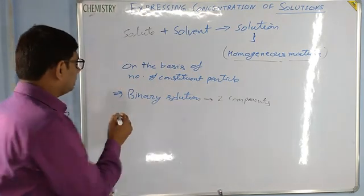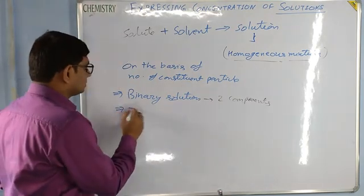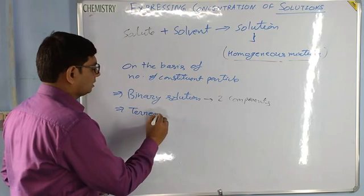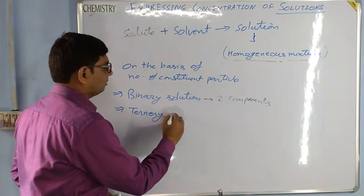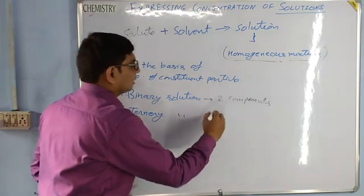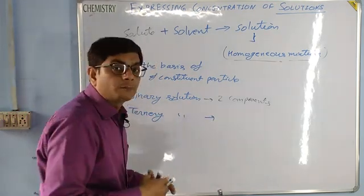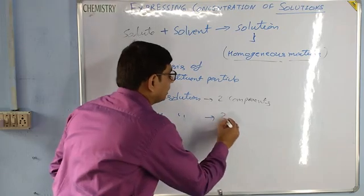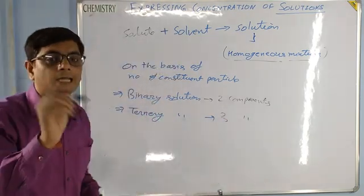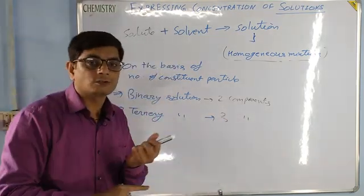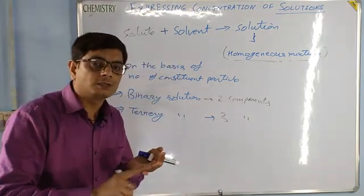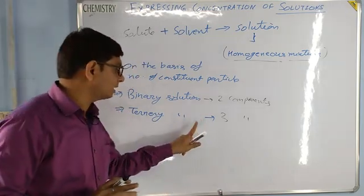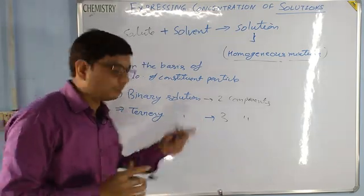Now another one is ternary solution. What do you mean by ternary solution? There should be three components. For example, salt and sugar along with water — there are three substances. That is called ternary solution.